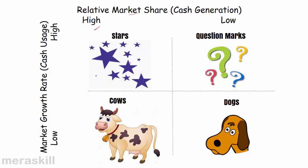Over a period of time, when the growth of that industry or product line saturates and demand saturates, it moves into the quadrant where the market share continues to be high but there is not much scope for growth. Therefore, further investments are not required. Cash generation is high but cash usage is low. These are often called cash cows.